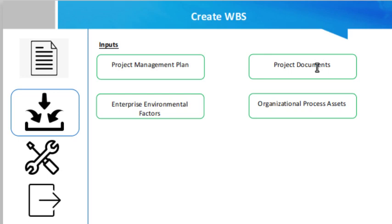Next is project documents — examples include the project scope statement and requirements documents. Then there are enterprise environmental factors, which influence the organization, the project, and its outcome. Every organization has to live and work within these factors, which can be either internal or external. Finally, organizational process assets include policies, procedures, templates for the WBS, project files from previous projects, and lessons learned from past projects.